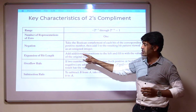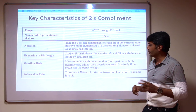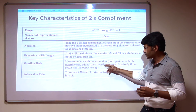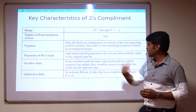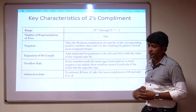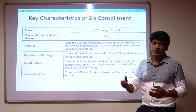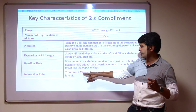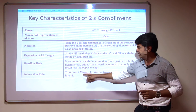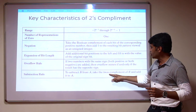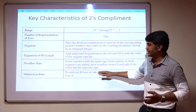The next characteristic is the overflow rule. There are two overflow cases to consider: one is when both numbers being added have the same sign — both positive or both negative. The last characteristic is the subtraction rule. To subtract B from A, take the 2's complement of B and then add it to A. This is how subtraction is performed.